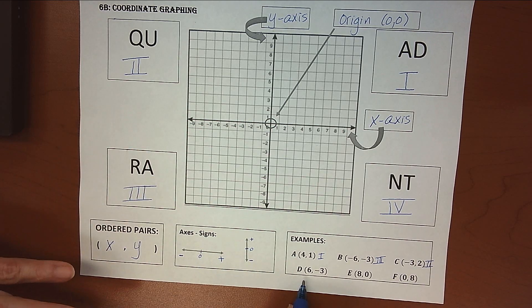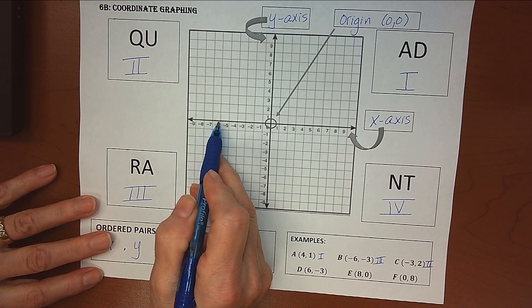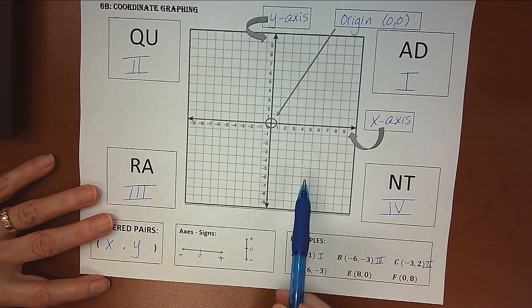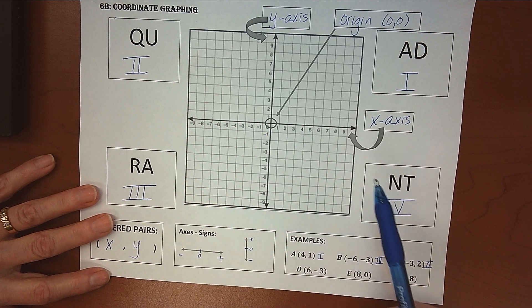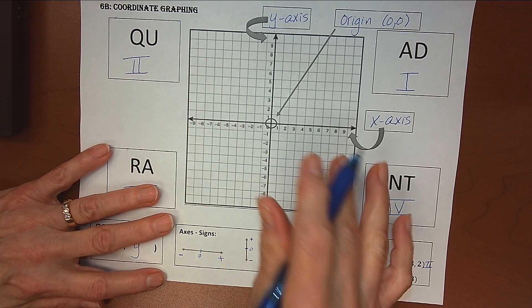And then 6, negative 3 tells us to go back 6, and then down 3. I'm sorry, that's positive 6, excuse me. That tells us to go positive 6, and then down 3. And that falls, then you can see, into quadrant IV.